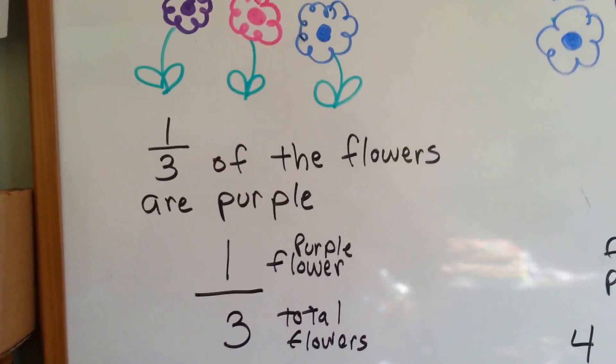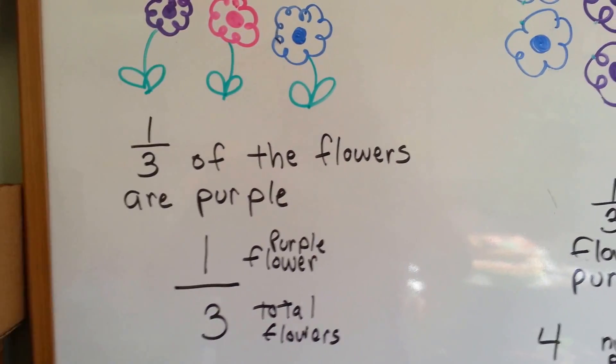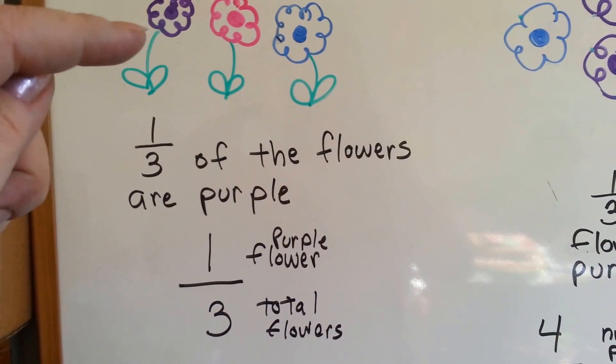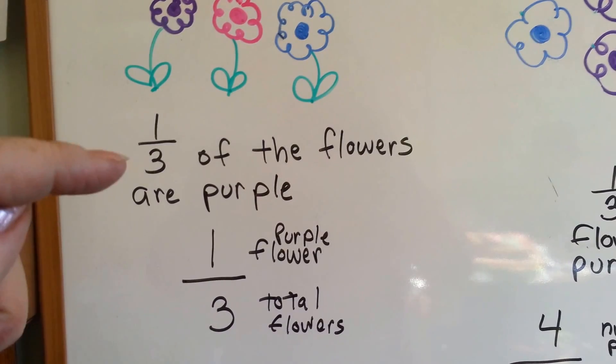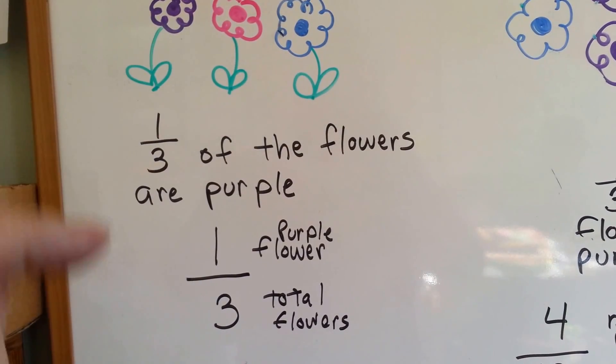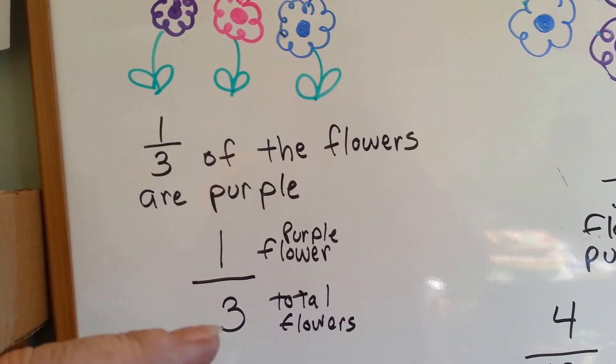So let's take a look at these flowers. We've got one, two, three flowers. One of the three flowers is purple. One-third of the flowers are purple. One out of three. There's one purple flower out of three total flowers. One-third.